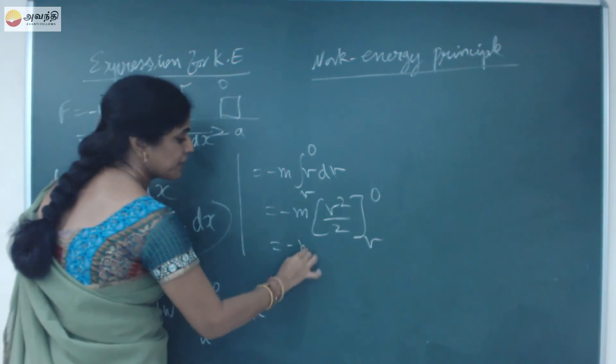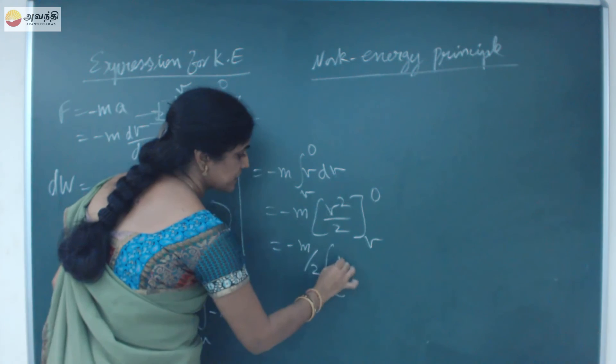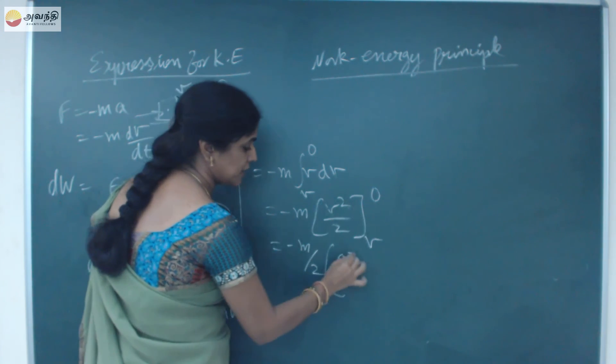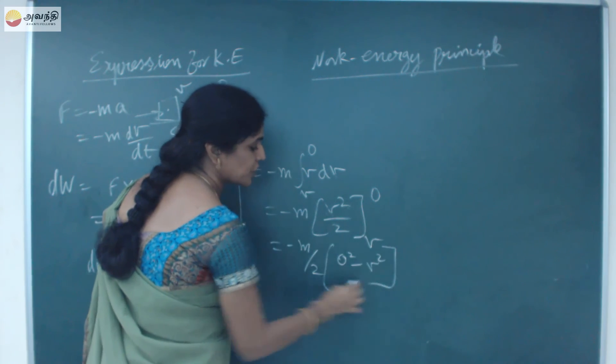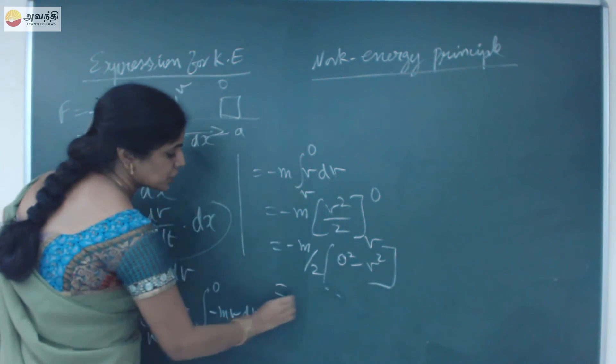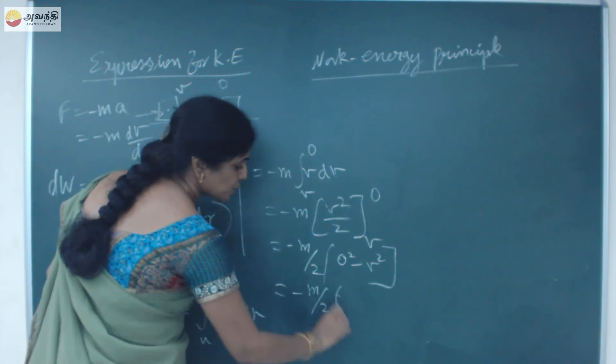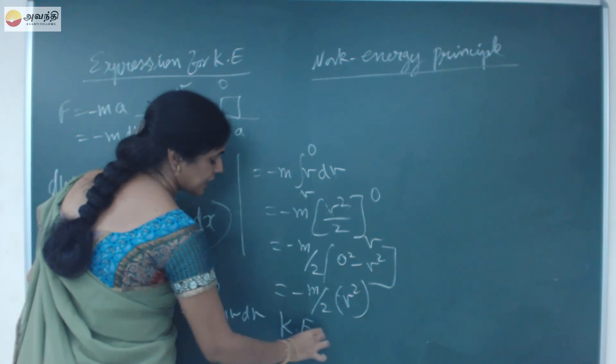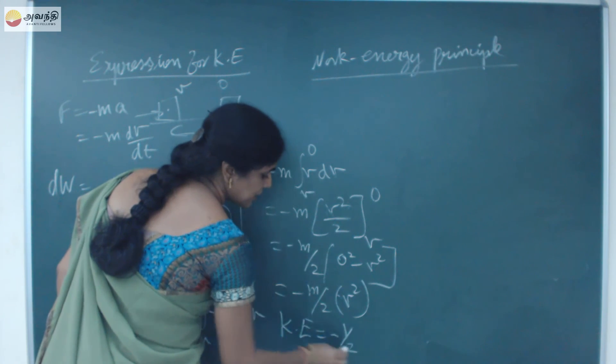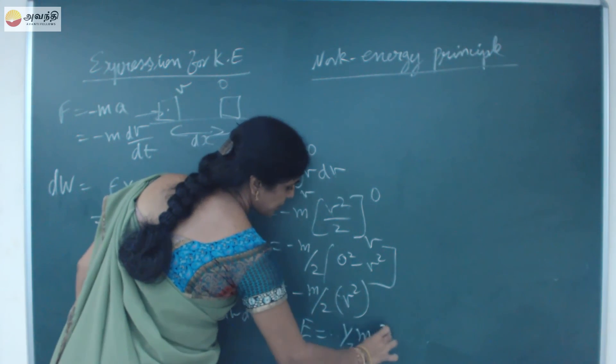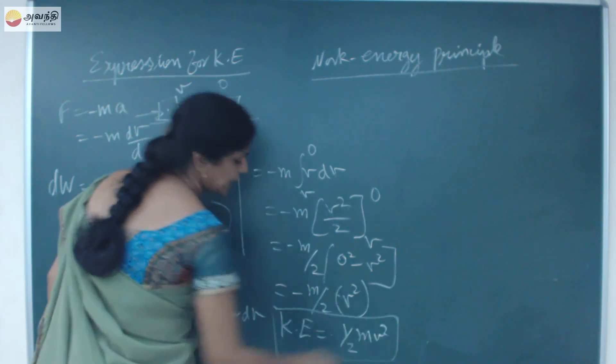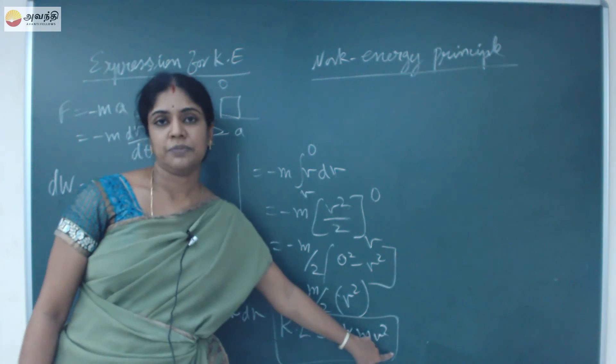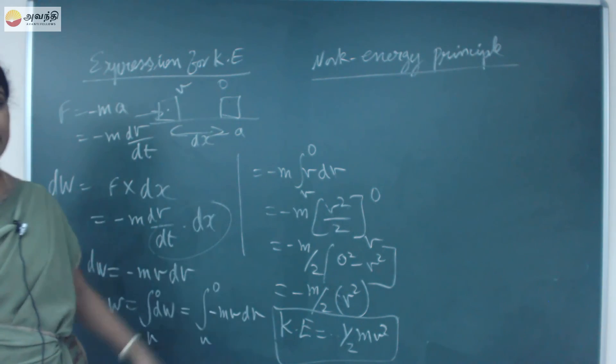This is minus M by 2. Zero, v square is equal to zero. Upper limit minus lower limit, so zero square minus v square. Zero square is zero. So finally I will be getting M by 2 into v square. So this is your expression for kinetic energy. That is nothing but half Mv square. Magnitude is negative, so kinetic energy expression is half Mv square. This we call as the kinetic energy.